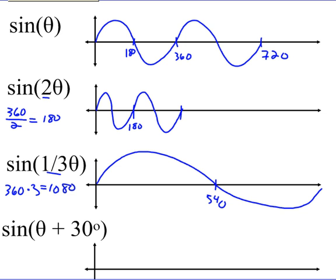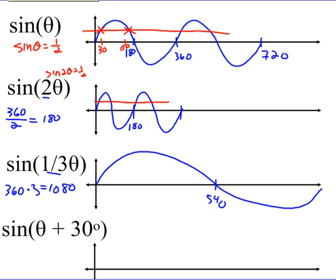Let's look at what shrinking and stretching does to solutions. For sine θ = 1/2, from 0 to 360 there are two answers — at 30 and 150. For sine 2θ = 1/2, there are four answers from 0 to 360. For sine (1/3)θ, there's only one answer from 0 to 360, though there are two between 0 and 540.